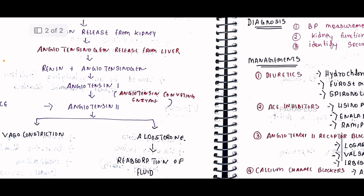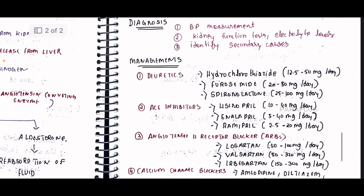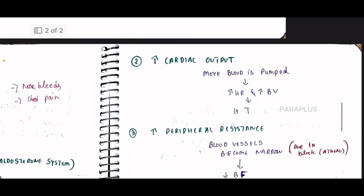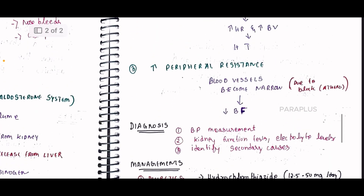Now, when this system becomes dysfunctional, BP rises abnormally. Looking at the pathology, the first pathway is cardiac output. If we increase the blood pump, then we increase the heart rate, and the blood volume increases, which causes hypertension — an increase in cardiac output leads to increased BP.